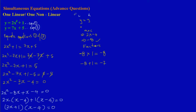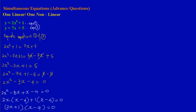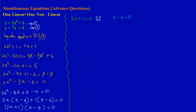Now that I have factorized the quadratic, I set each factor equal to zero because a quadratic always has two solutions for x. So I have 2x plus 1 equal to 0, or x minus 4 equal to 0.